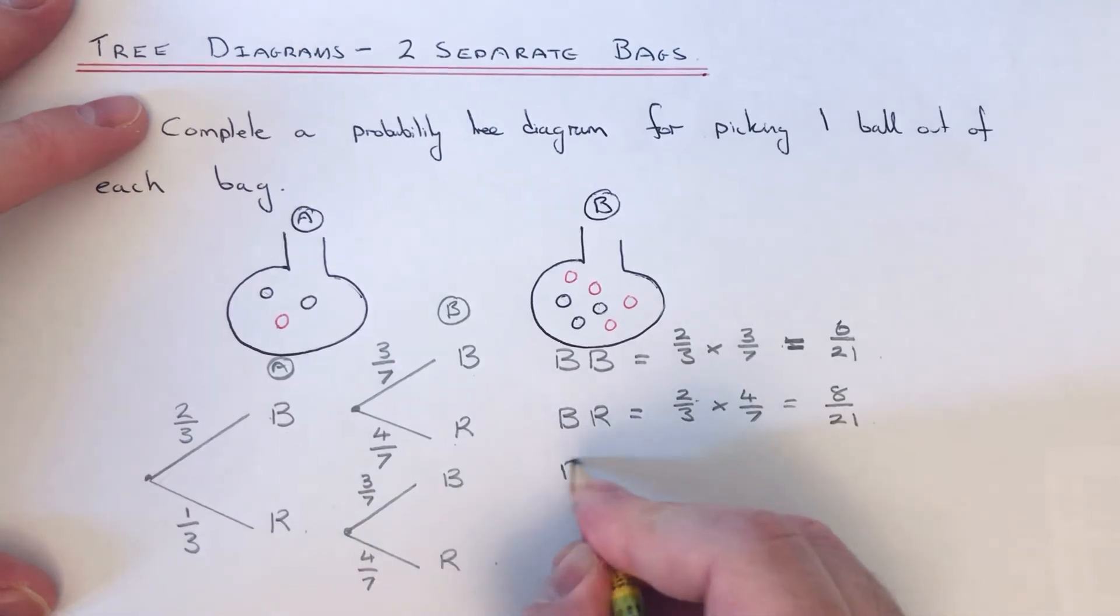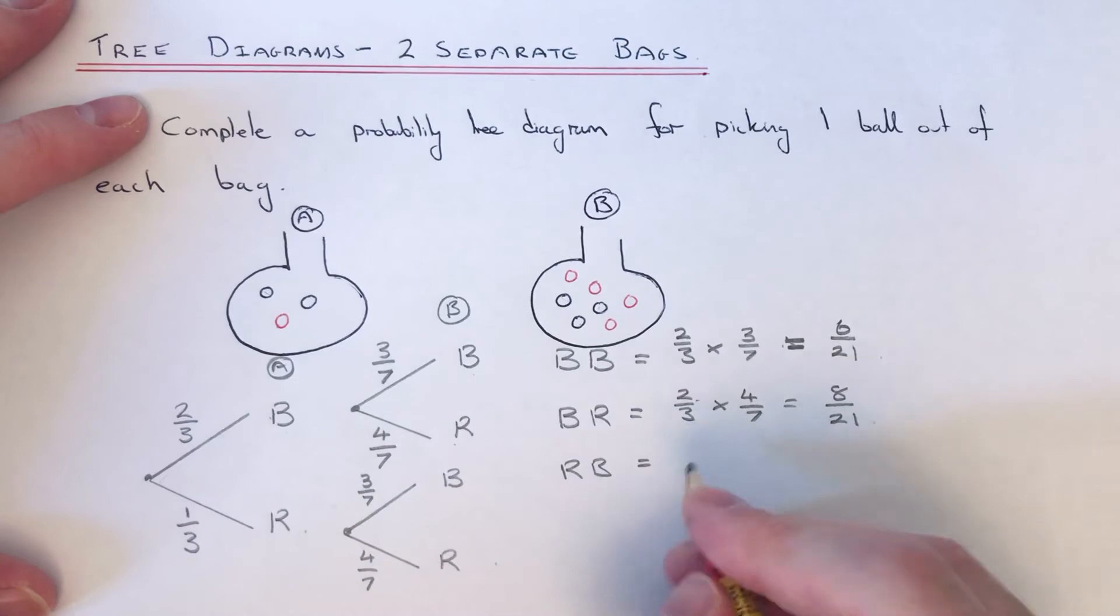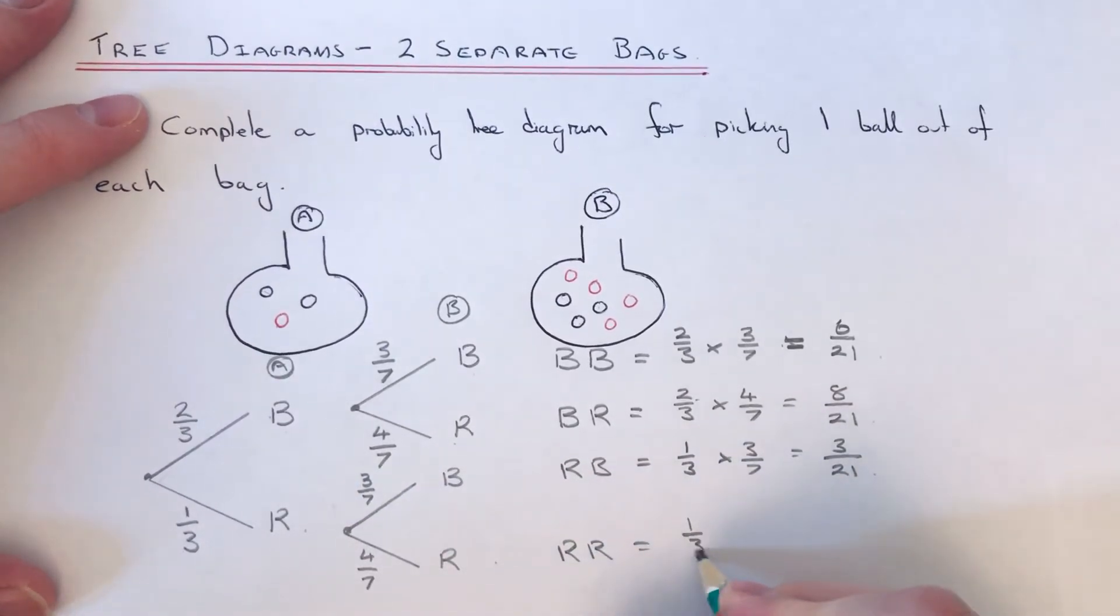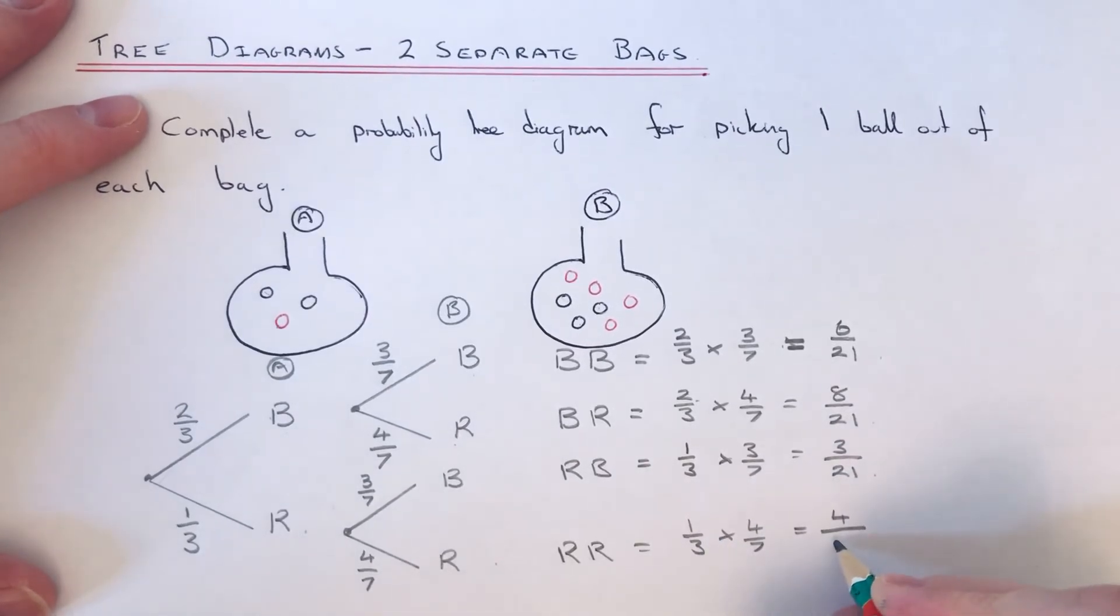And then the bottom row, our final outcome is red and red. So that's a third times four sevenths. One times four is four, three times seven is twenty one.